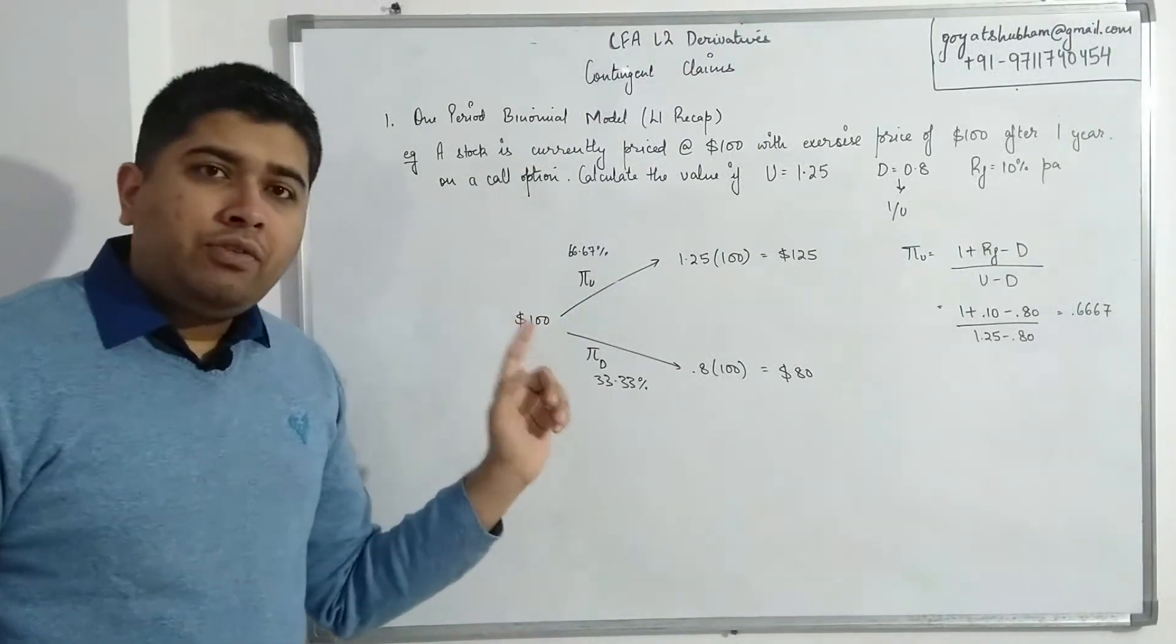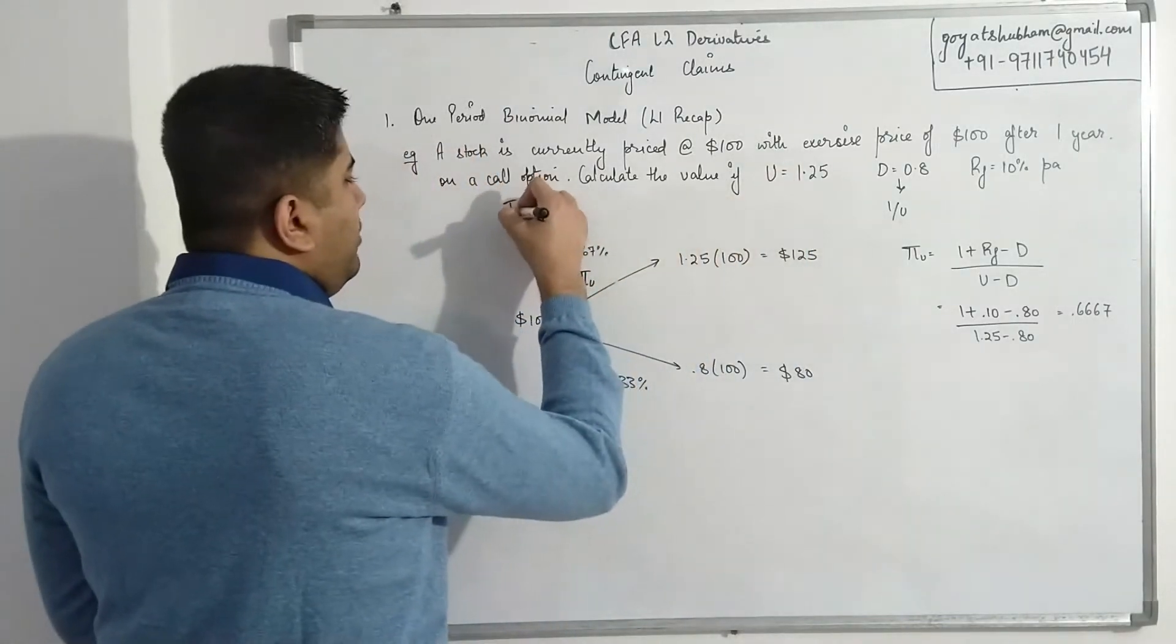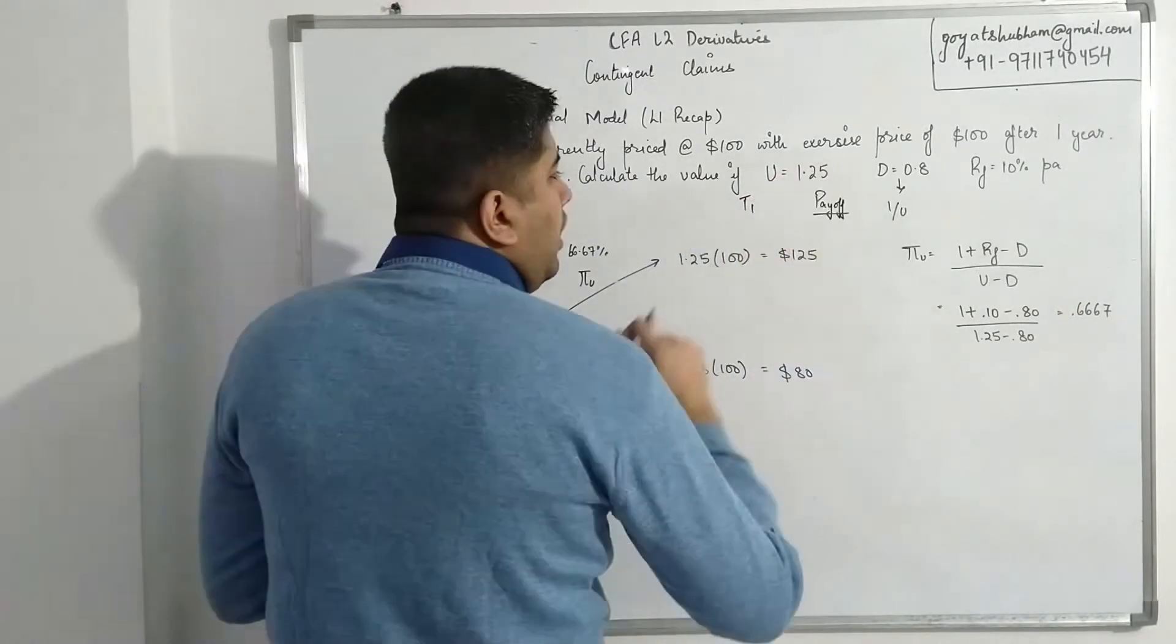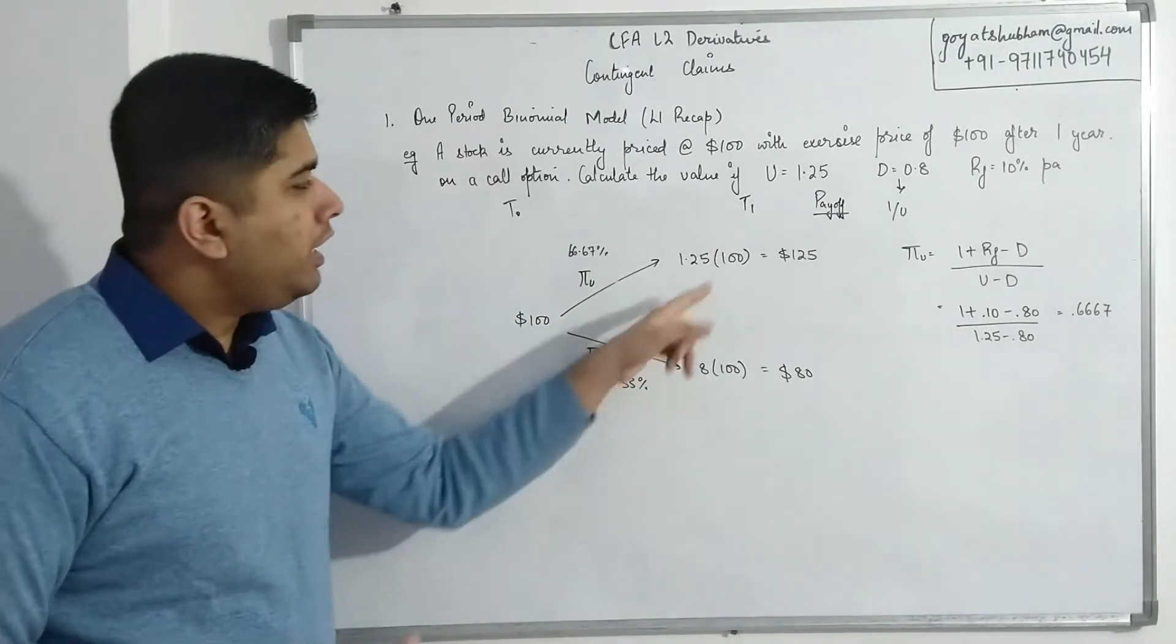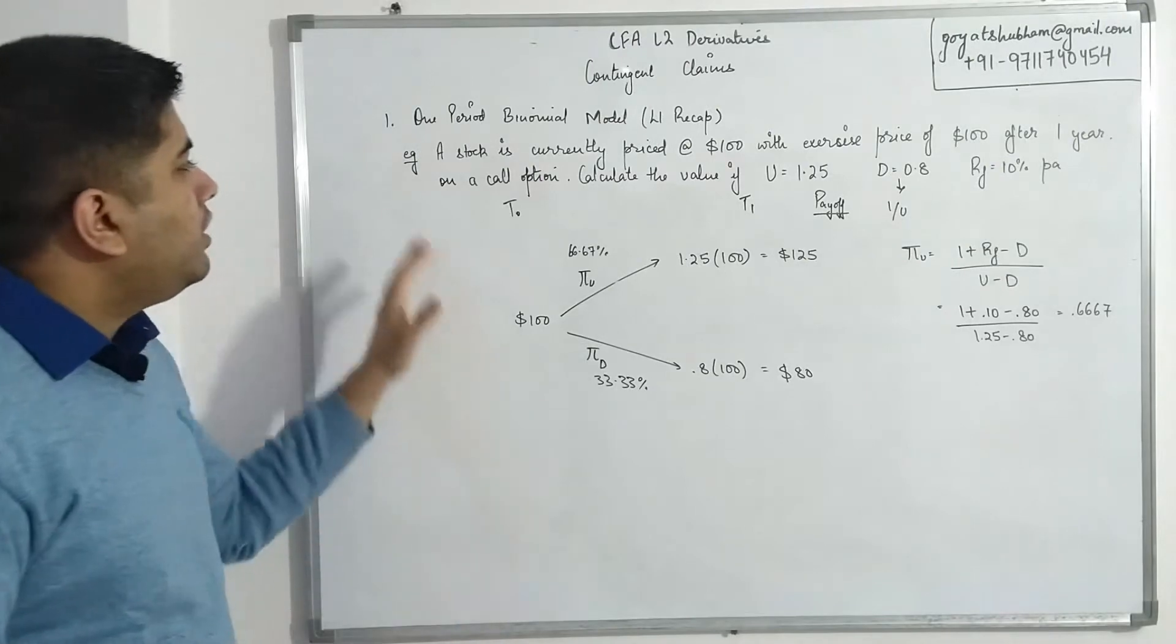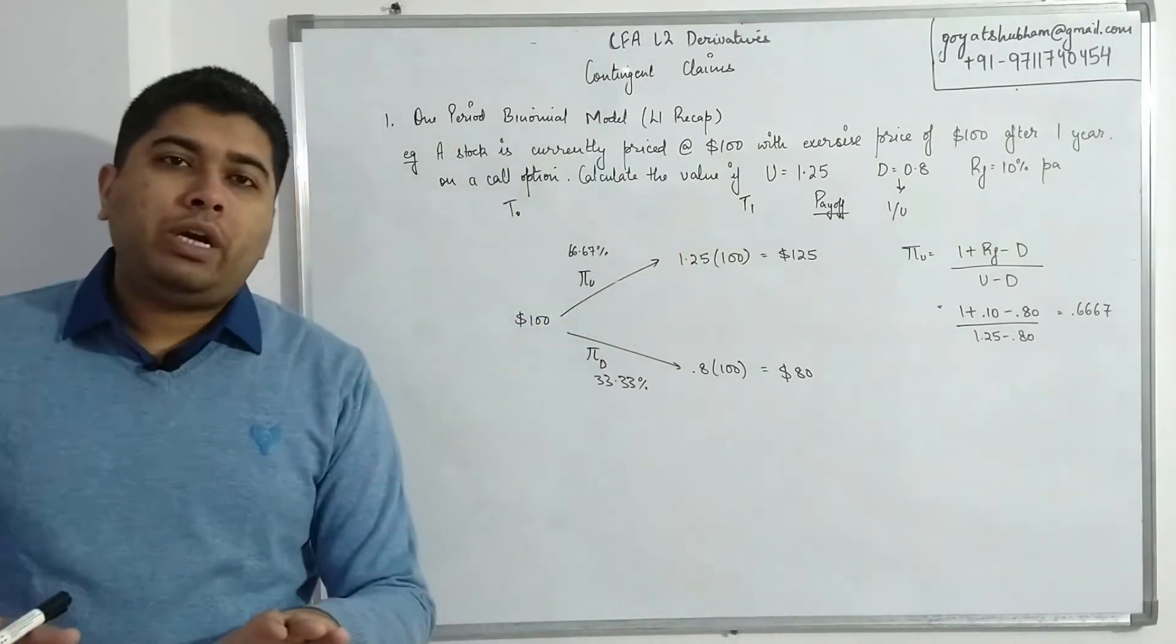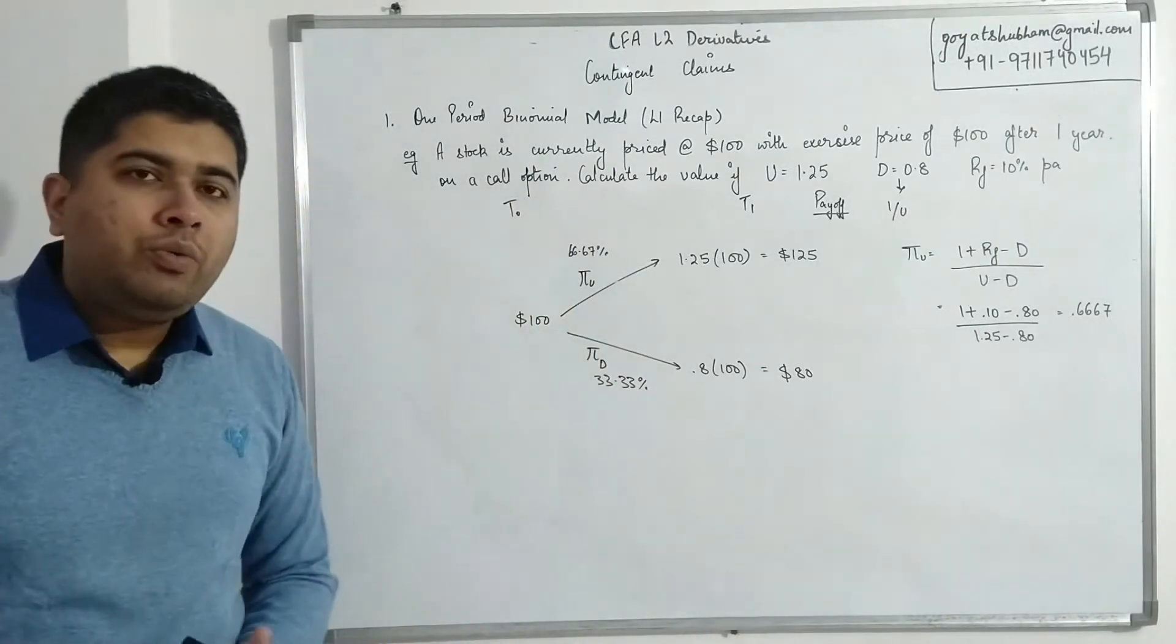Using that, we have to figure out what will be the payoff. This was time 0, this is time 1. These are values expected at time 1. I want to know the payoff that we might come across after one year if we have these respective prices. Wherever the information is missing, whether you're the long party or the short party, we always assume long by default.